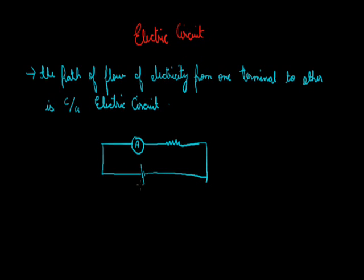This figure depicts the electric circuit. This is the positive end of the battery while this is the negative end of the battery. This A represents the ammeter. Ammeter is a device which is used to measure the current, and in the electric circuit it is always connected in series.